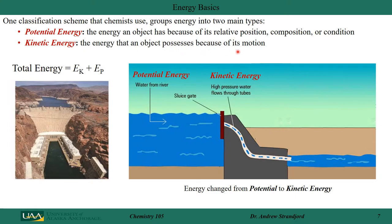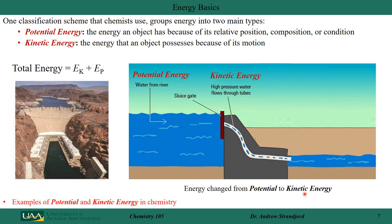We can convert that potential energy into kinetic energy, which is the energy that an object possesses because of its motion. When I open the sluice gate and allow water to flow from a high level to a low level, as it flows it has kinetic energy. So the energy changes from potential to kinetic, and hopefully we can use that kinetic energy to do something useful.